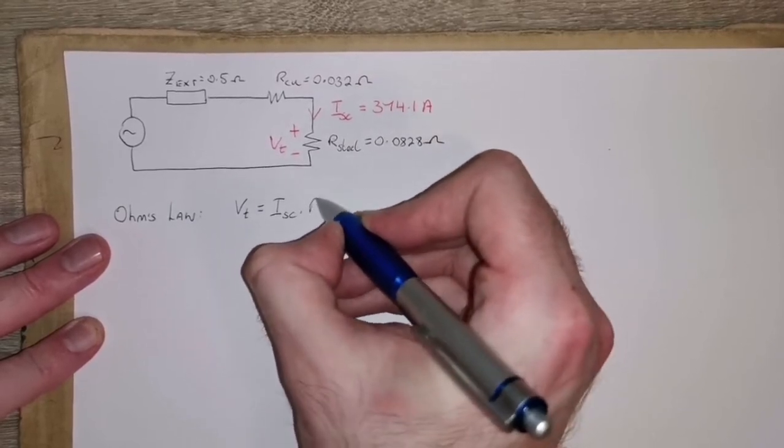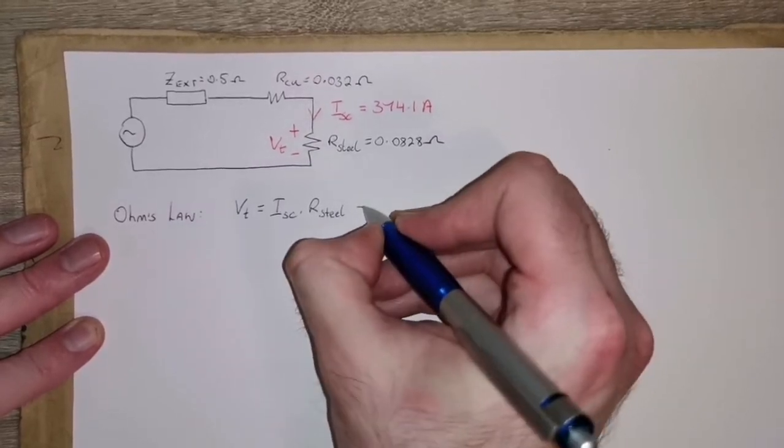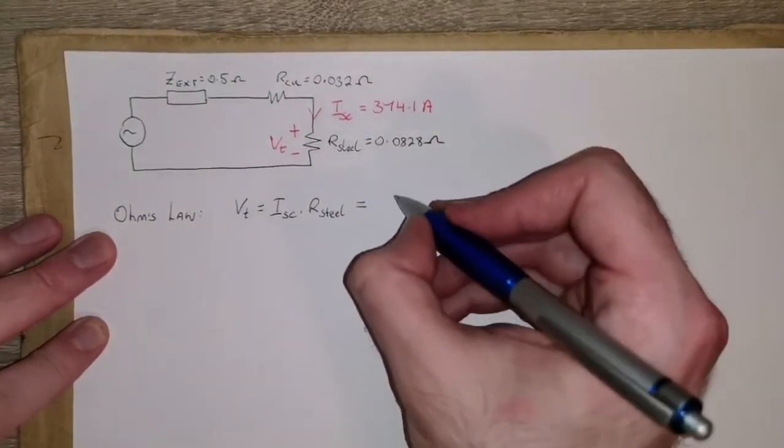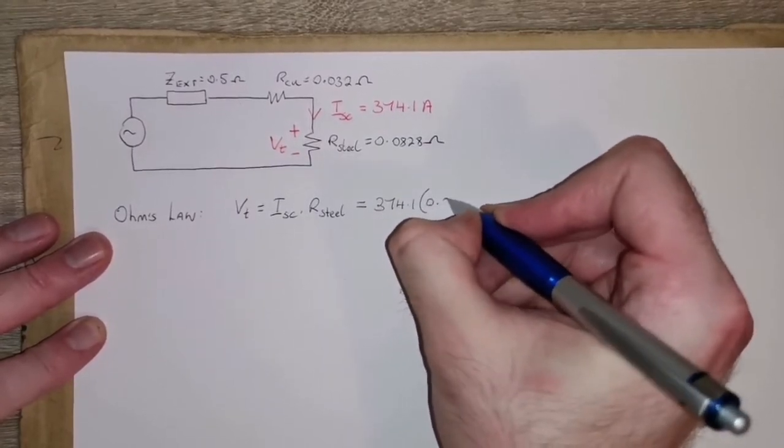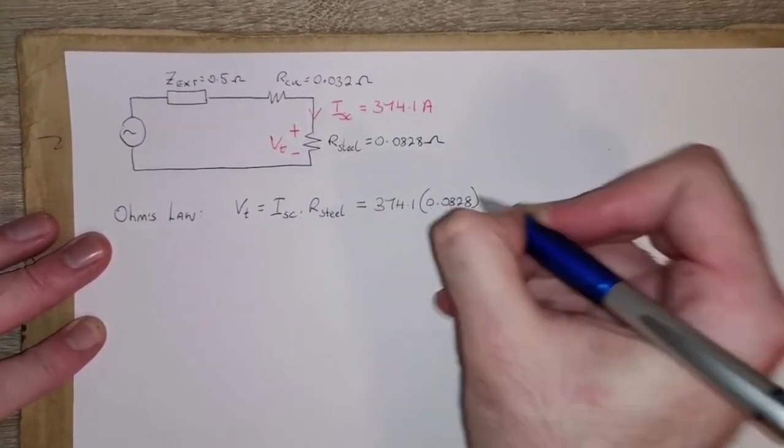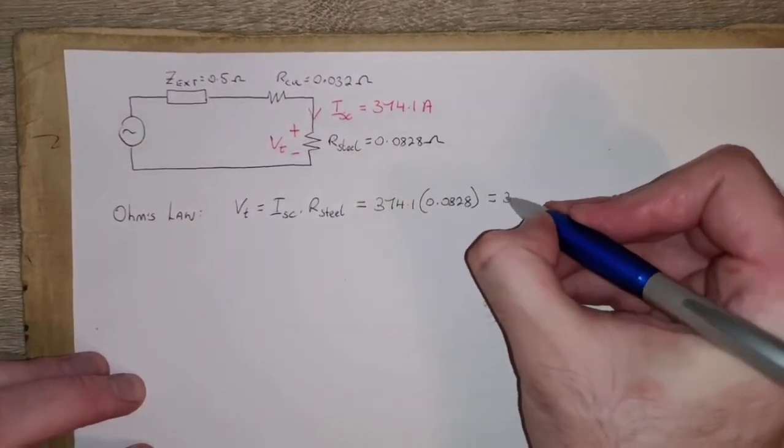374.1 times 0.0828, and that comes out at about 30.98 volts.